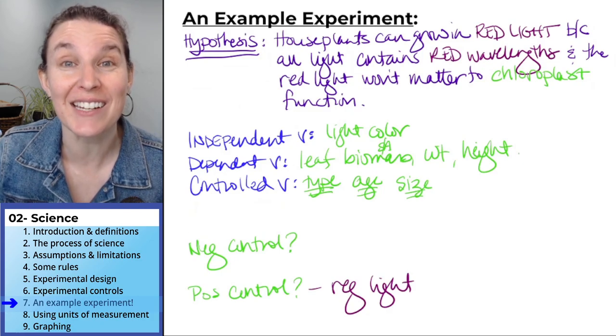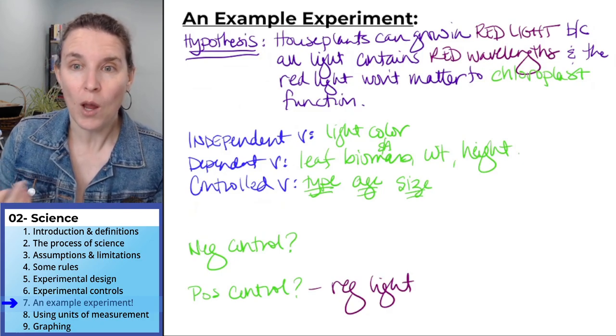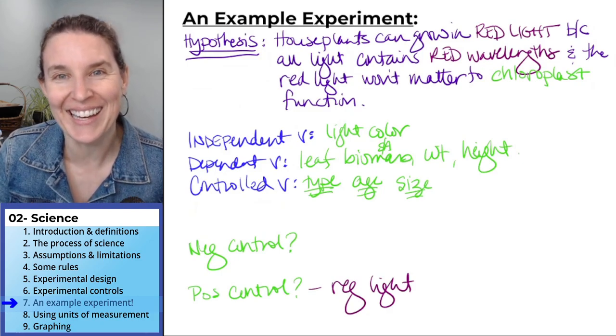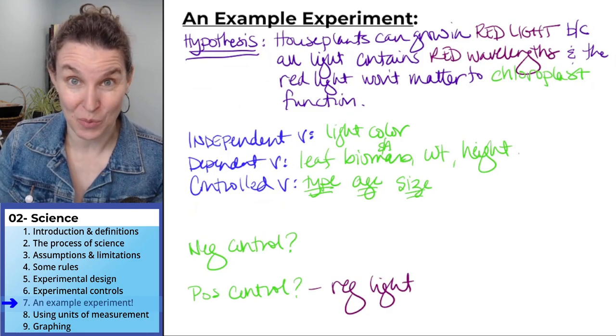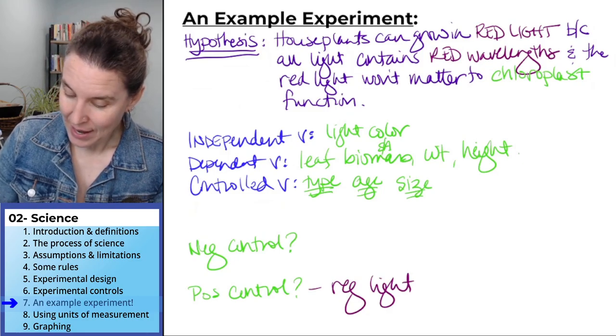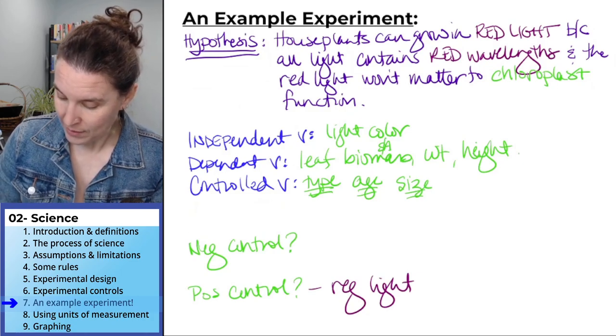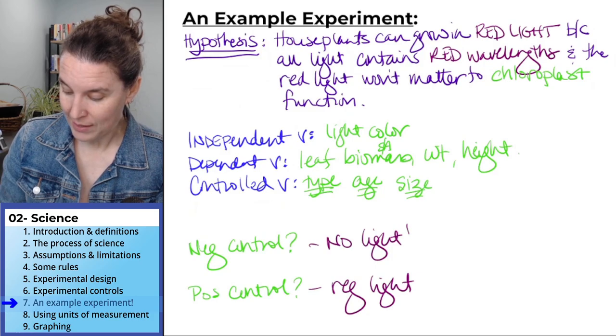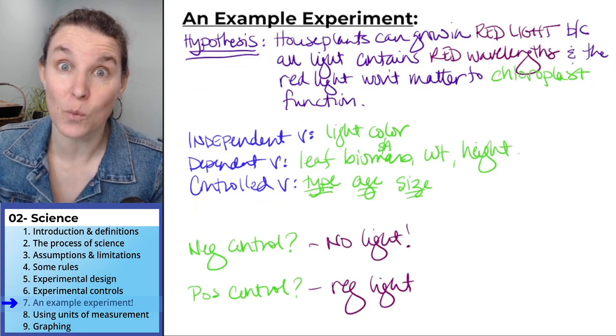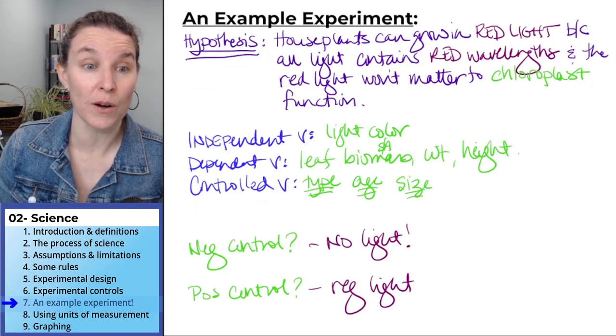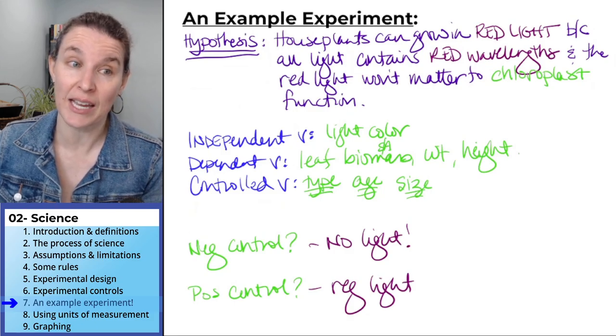The other, how could we do a negative control? What would it look like if the plant didn't do well in the red light? We could have a negative control of what? No light. That would tell us what it would look like with our plants not having any light at all.